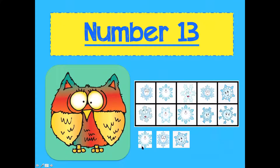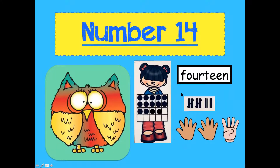Now number 14 — number 14 also is a two-digit number. It has a group of 10 and four little ones. The little girl is holding the 10-frame: the one 10-frame is full and then there are four little ones. Let's count: 1, 2, 3, 4, 5, 6, 7, 8, 9, 10, 11, 12, 13, 14. Say 14. It's spelled f-o-u-r-t-e-e-n.